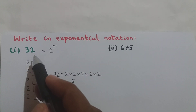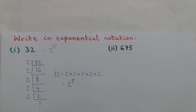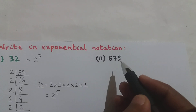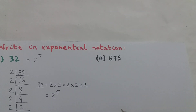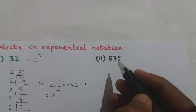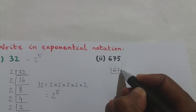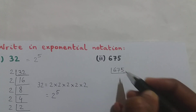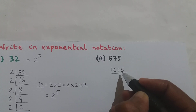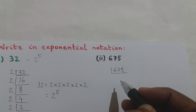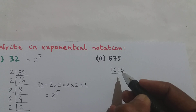32 in its exponential form is 2 raised to the power of 5. Now let us do the second question. We have to write 675 in its exponential form, so we have to do the prime factorization of 675. In prime factorization we keep dividing till the number becomes 1. The smallest prime number is 2, but 675 is not divisible by 2.